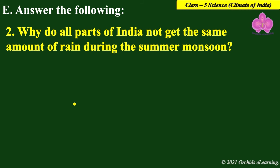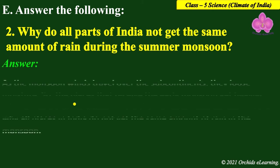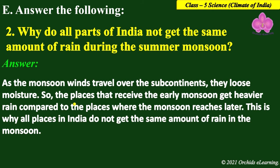Next: why do all parts of India not get the same amount of rain during the summer monsoon? Answer: as the monsoon winds travel over the subcontinent, they lose moisture. So the places that receive the early monsoon get heavier rain compared to the places where the monsoon reaches later. This is why all the places in India do not get the same amount of rain in the monsoon season.